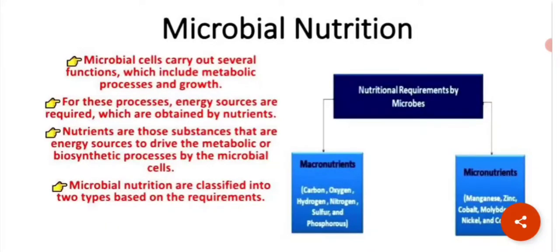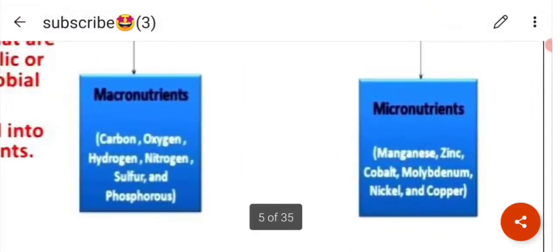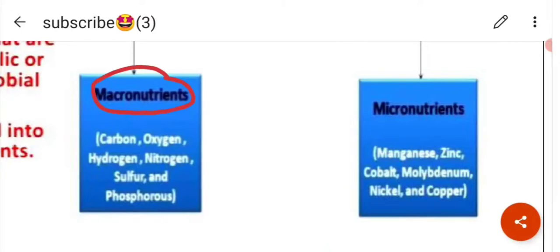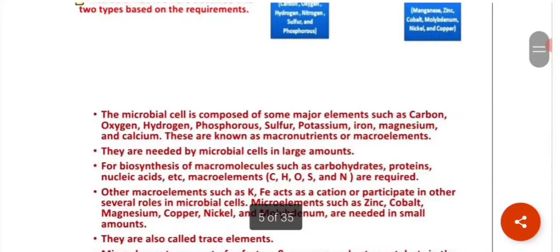Microbial nutrition can be divided based on requirement. The first category is macronutrients — elements required in high amounts by microbes, such as carbon, oxygen, hydrogen, nitrogen, sulfur, and phosphorus. Then we have micronutrients, which are needed in very low amounts — these include manganese, zinc, cobalt, molybdenum, nickel, and copper.